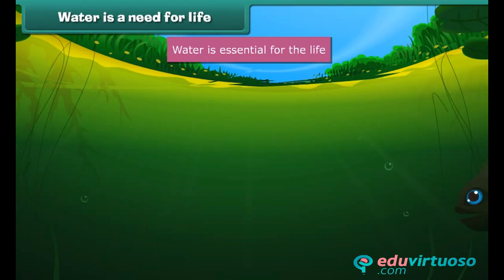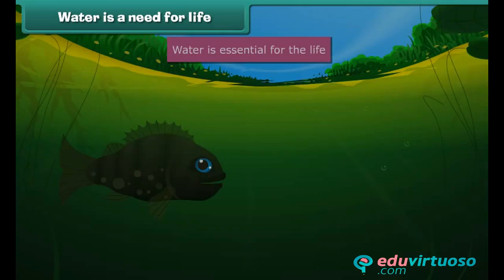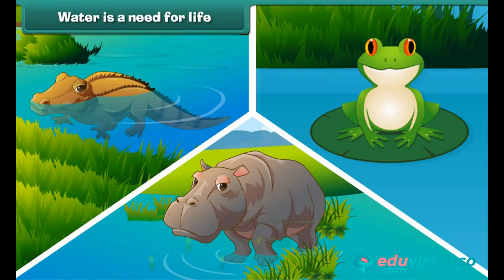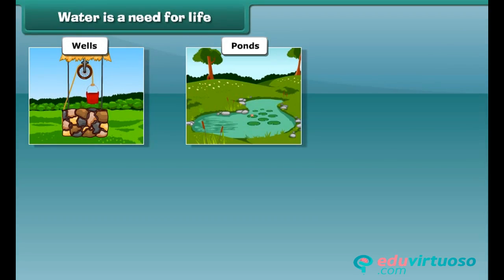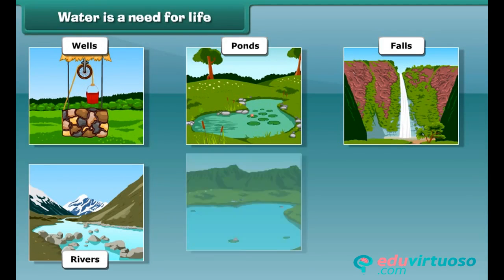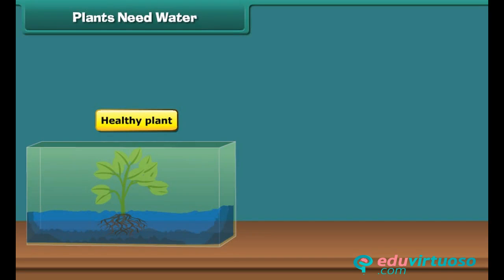Is it possible that we remain alive without drinking water? Can fishes remain alive without water? No, we all cannot survive without it. So water is essential for the existence of living beings. We find water in wells, ponds, falls, rivers, lakes and seas. Not only animals but plants also need water for survival.